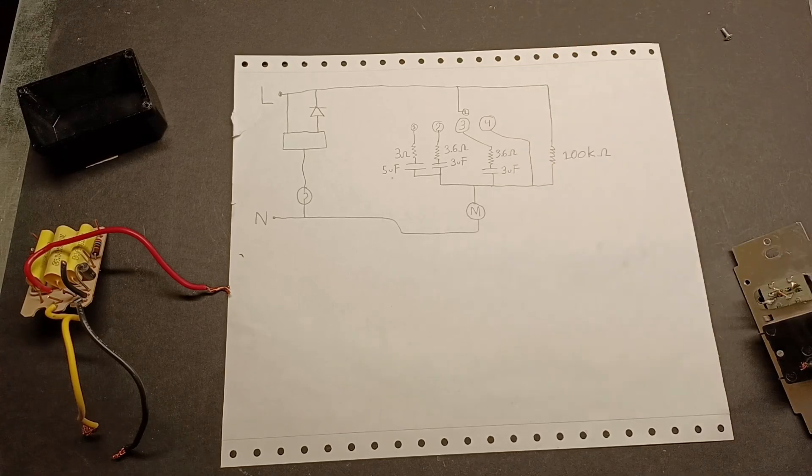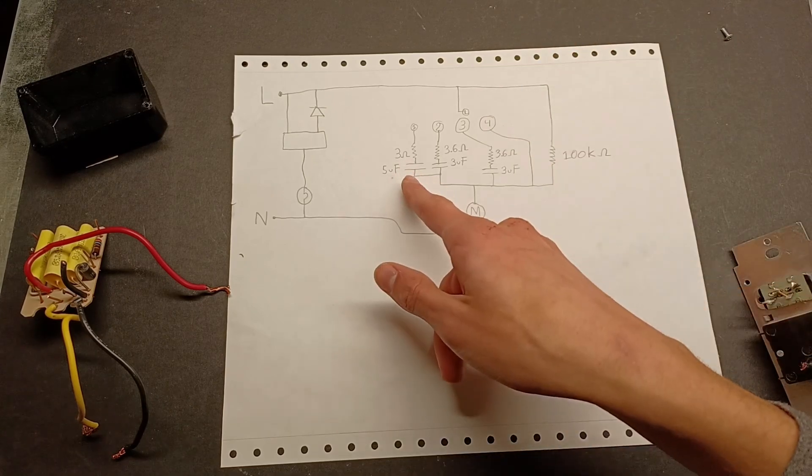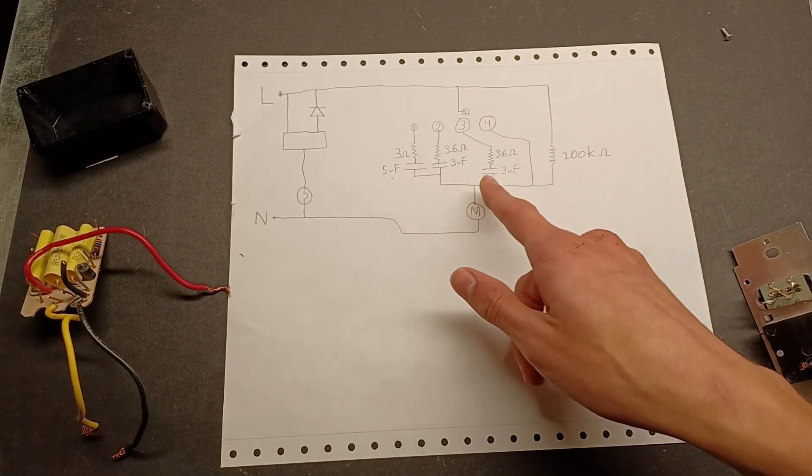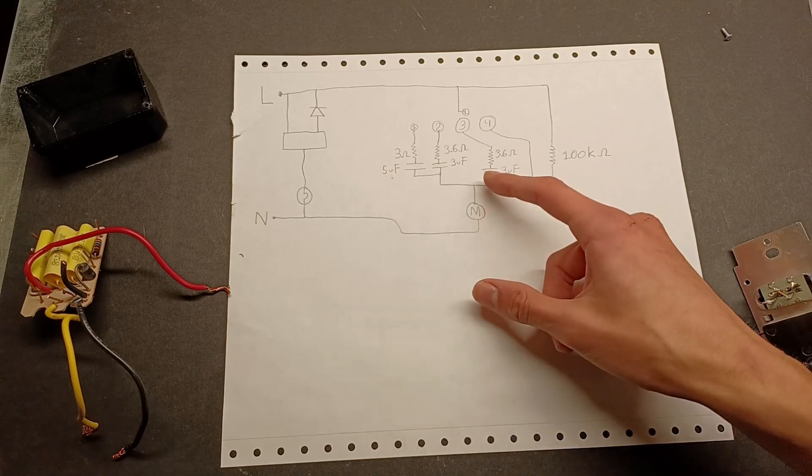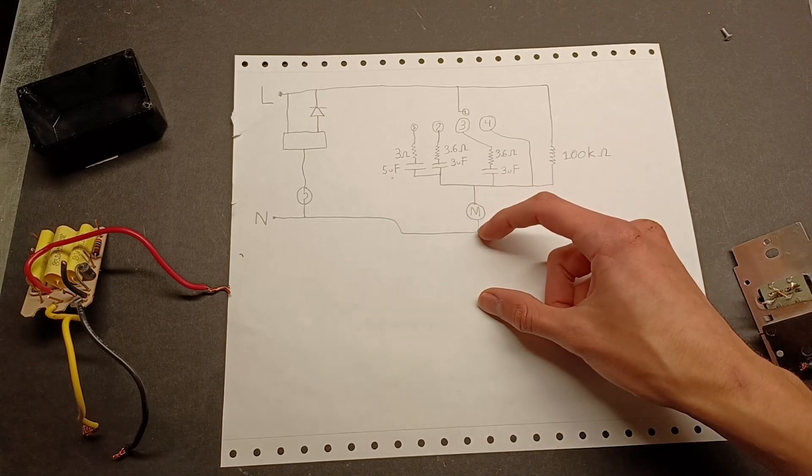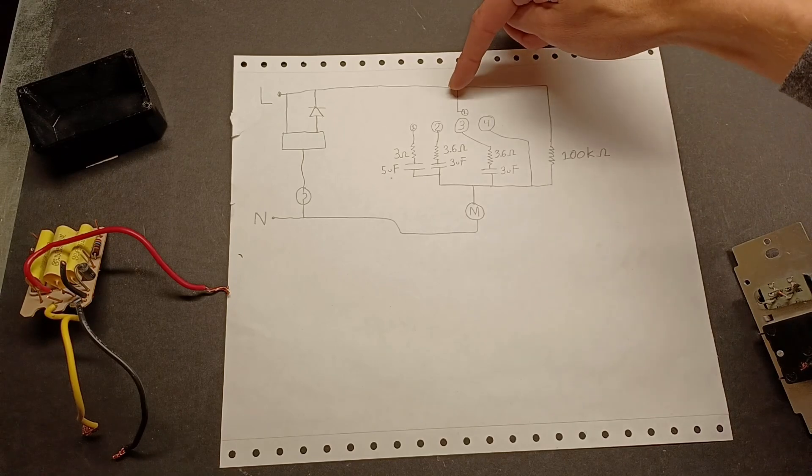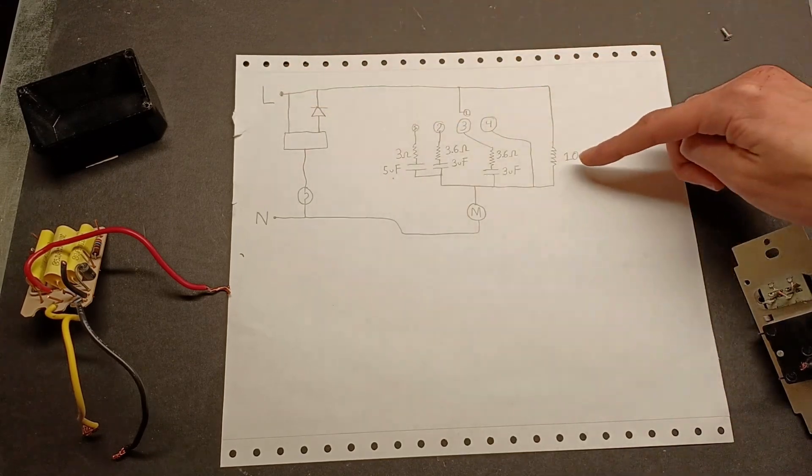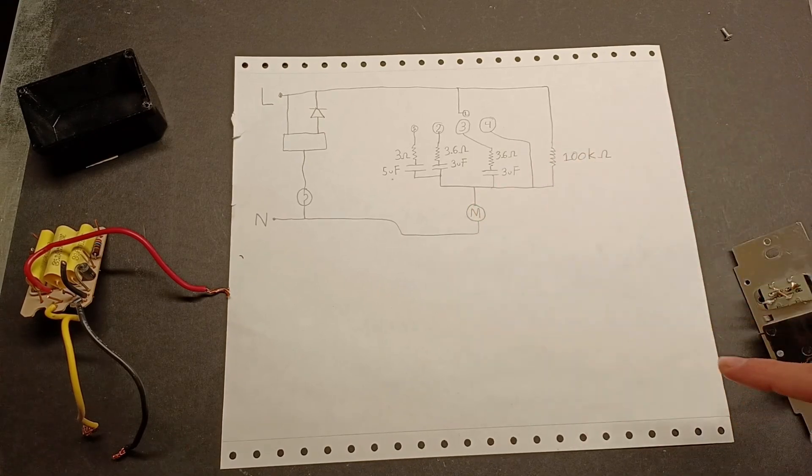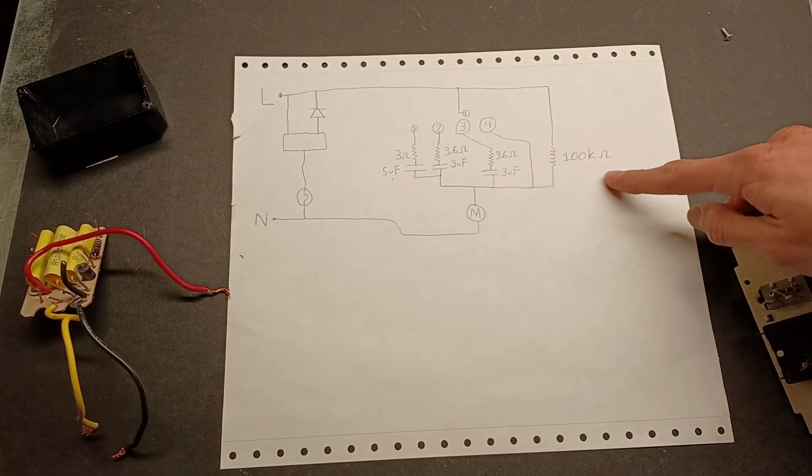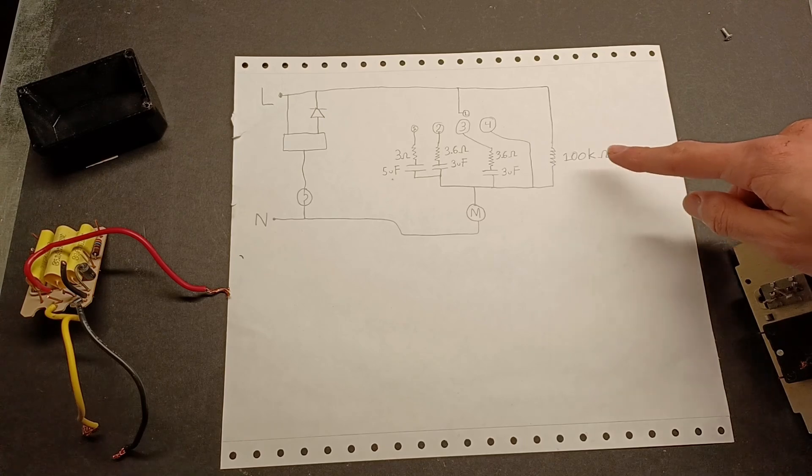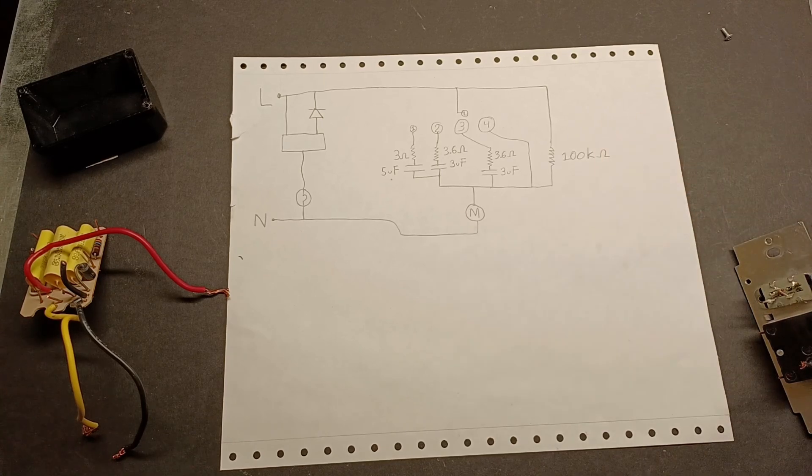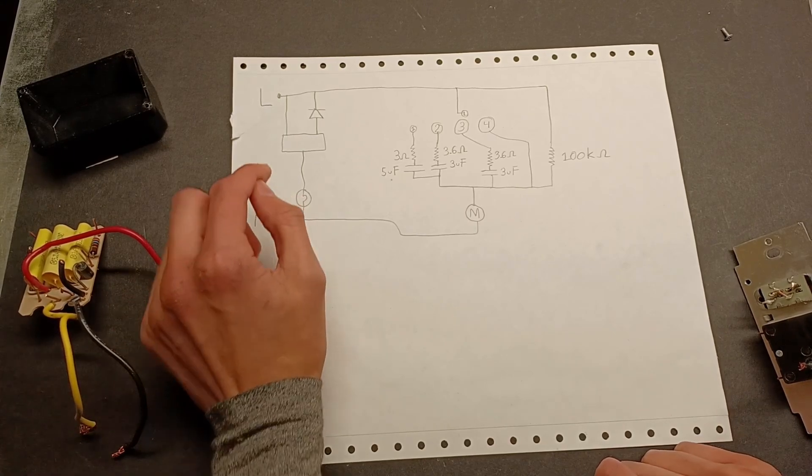And terminal 4 is directly connected to the output. And the output of all of these is connected in parallel, which is then connected to the fan motor. What's also very interesting is directly connected between the main power wire coming in and the motor of the fan is a 100 kiloohm resistor, which is probably to discharge the capacitors in some very weird way.